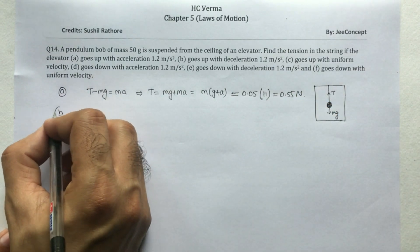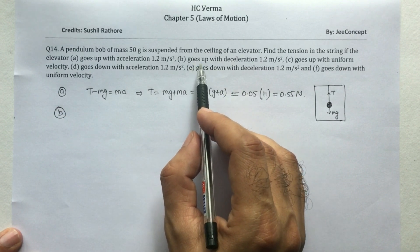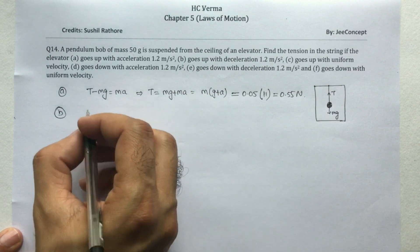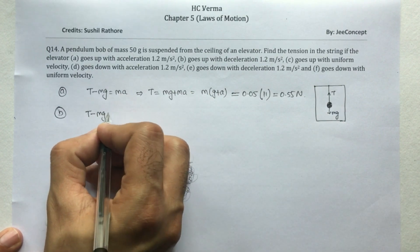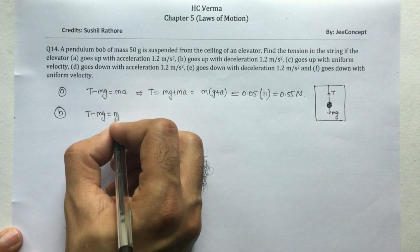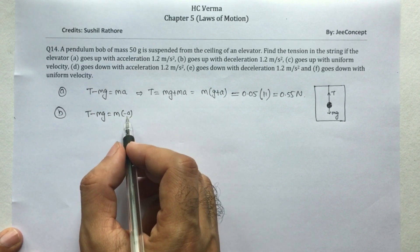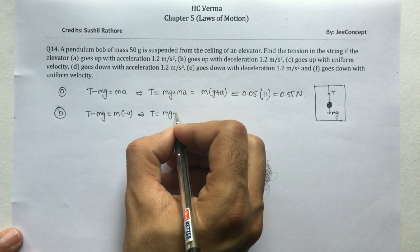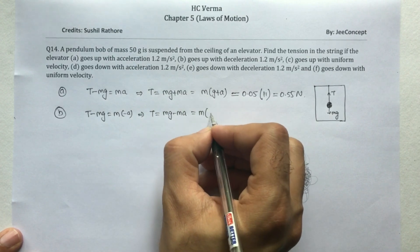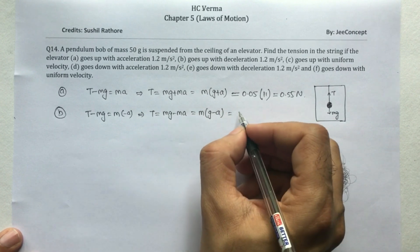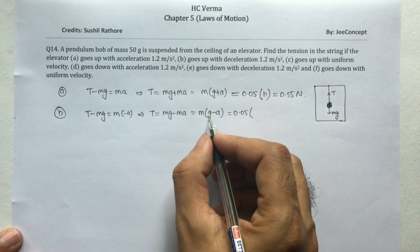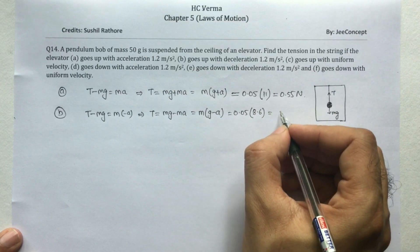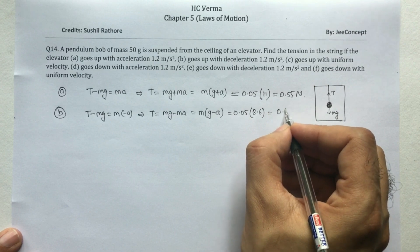So the answer for part A is 0.55 Newton. For part B, the elevator is going up with deceleration of 1.2 m/s². It is still going up, so the equation is T minus mg equals m times (minus a) because it is deceleration. This gives T equals mg minus ma, or m times (g minus a): 0.05 into (9.8 minus 1.2) equals 0.05 times 8.6, giving 0.43 Newton.